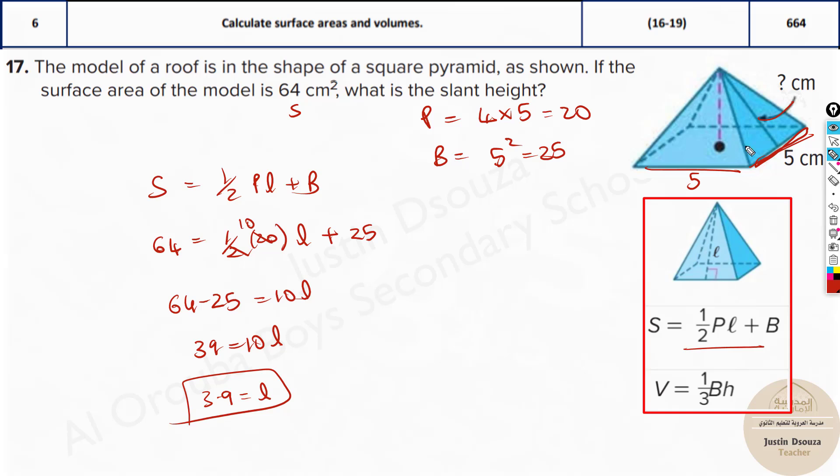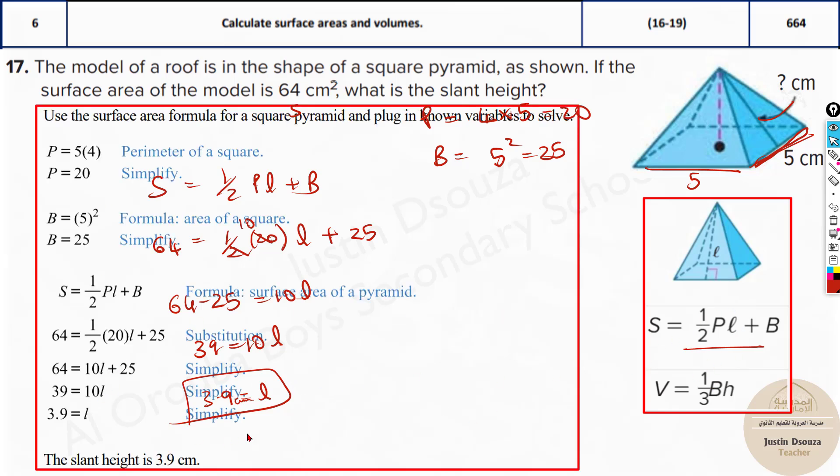So the slant height is 3.9 centimeters because the units are in centimeters. That is how we solve it. We do not need to use the volume formula because they have not asked for the volume, only the slant height. That is the answer.